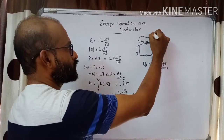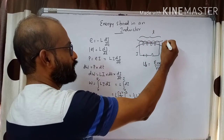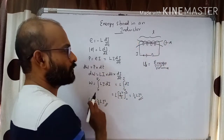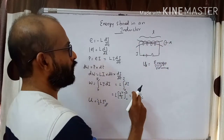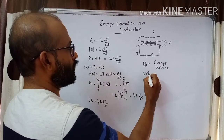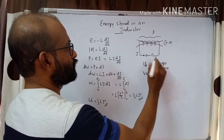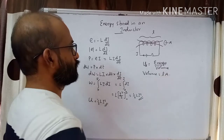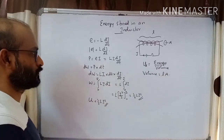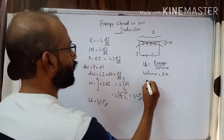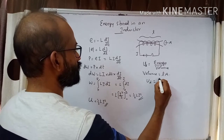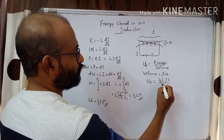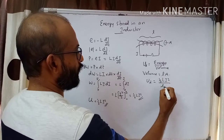Let l be the length of the solenoid and A be its cross-sectional area. The volume of the solenoid equals length times area cross-section, that is l times A. So energy density U_d equals energy divided by volume: half L I squared divided by l times A.